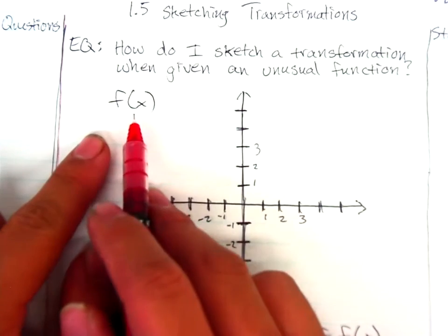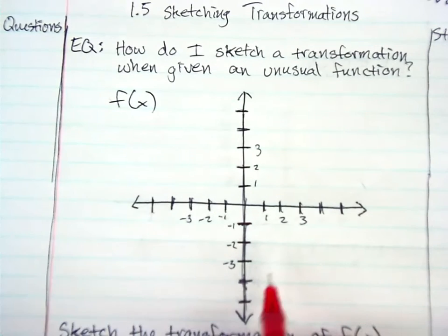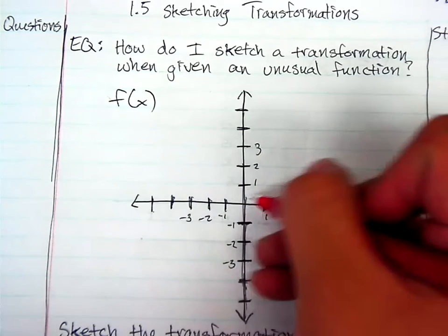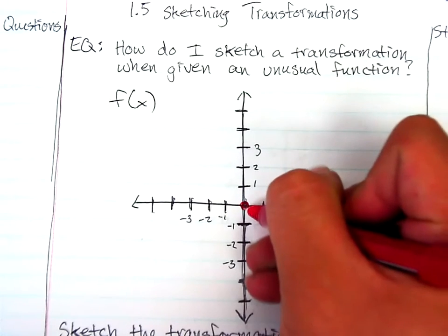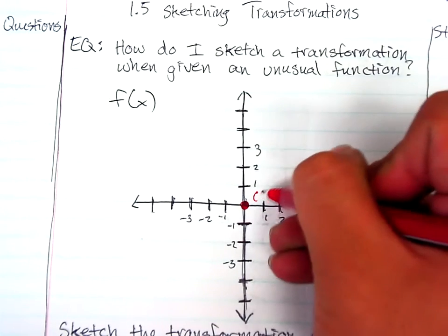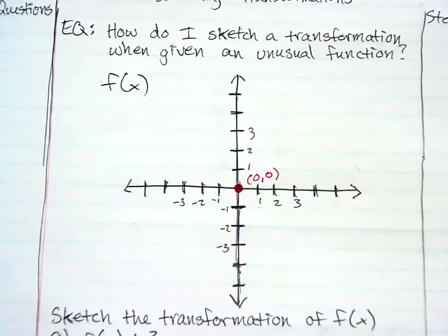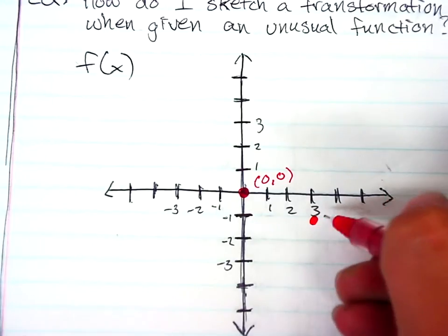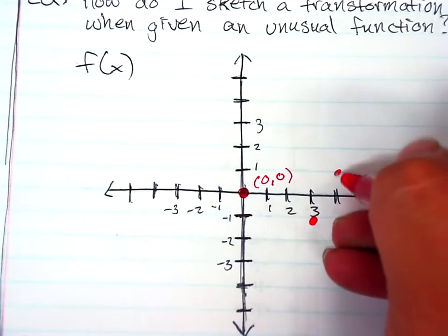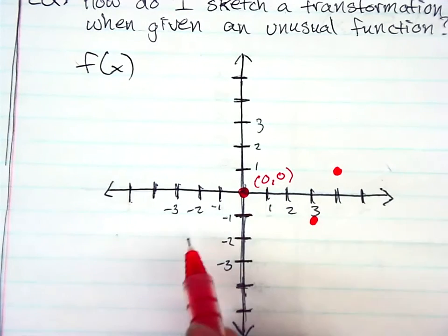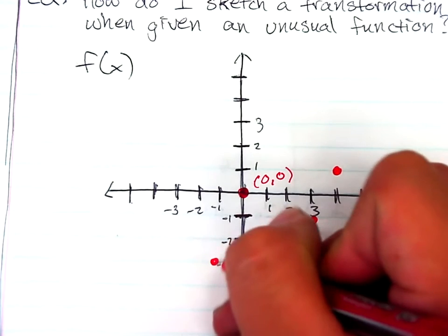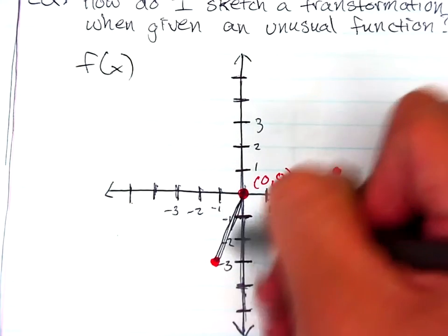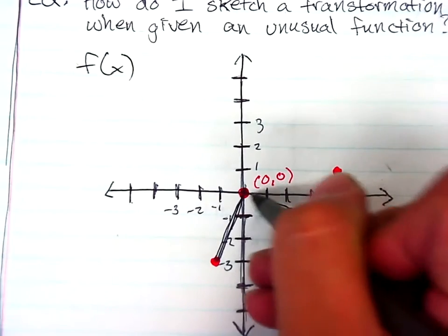The function that we end up graphing here is the function that we're going to actually use for all of the rest of the problems today. And we actually have four different transformations that we want to do. So let's go ahead and plot the points of the original function first off. So the first point is at (0, 0). Our next point will be at (3, -1). Our next point after that is at (4, 1). And then our last point is actually all the way back here at (-1, -3).